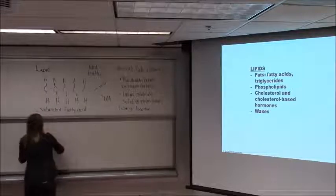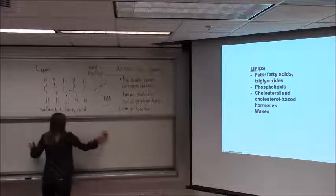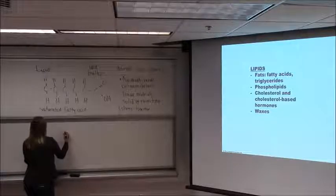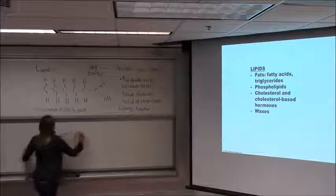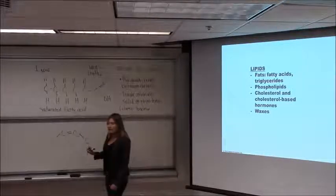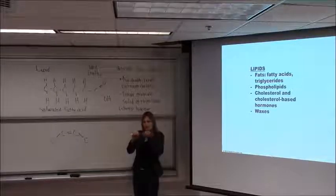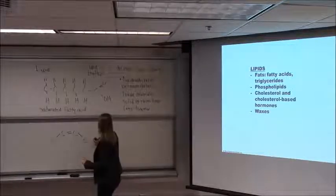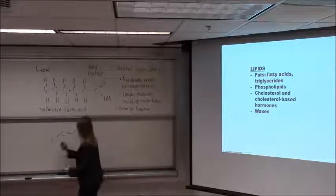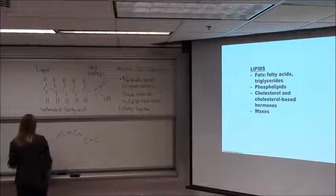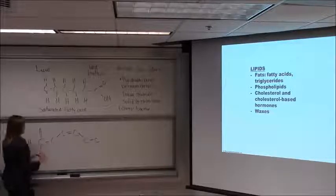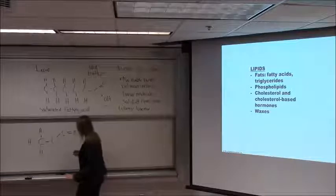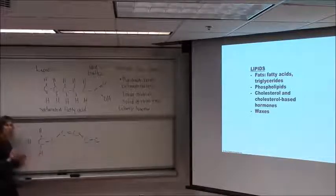Unsaturated fatty acids do have double bonds between carbons and are not linear. When you have a double bond between carbons, you get a bend — a kink in the chain on either side of that double bond. That double bond is very rigid; the carbons can't rotate around it, and it tends to form a bend. So if I continue this chain, these carbons with the double bond can only hold one hydrogen each instead of two, because they're already sharing electrons in the double bond.